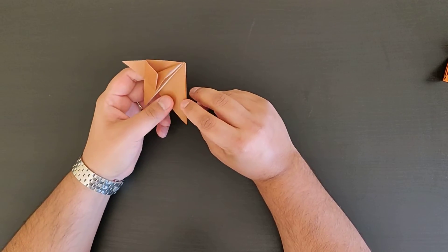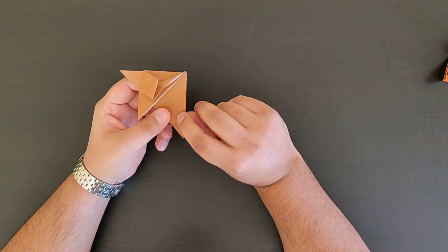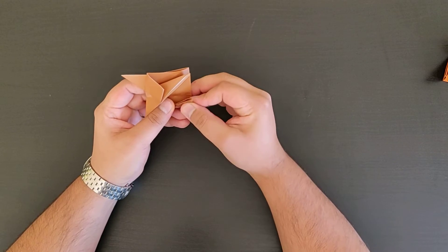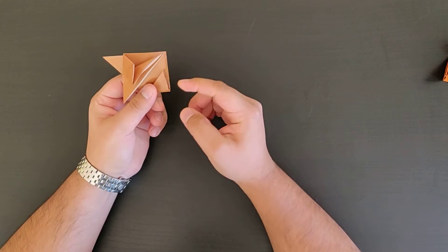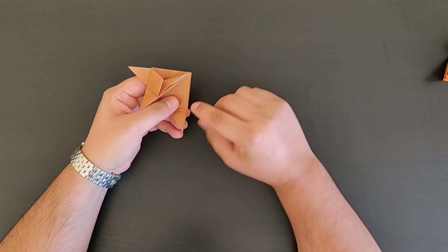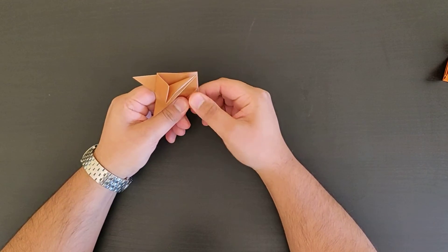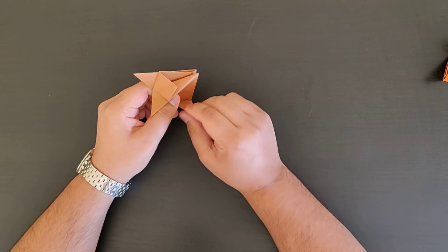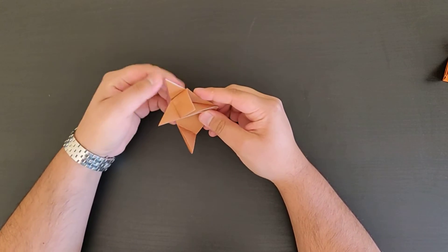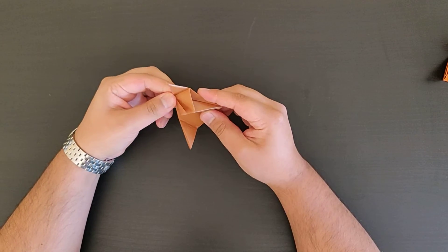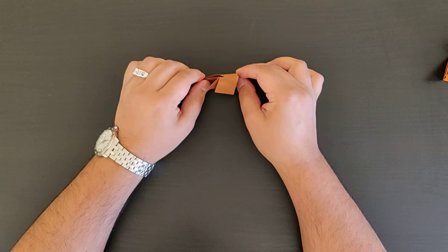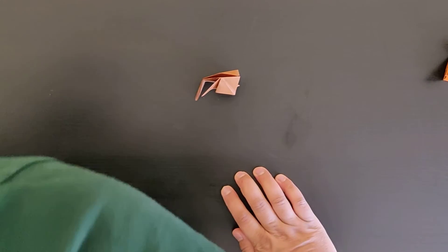And then all you want to do is get the tail, about a third of this length here, just fold it on itself so that that edge is folding onto itself like that. And that's the fox ready to go. You can just bend these ears in a little, it gives us a better look.